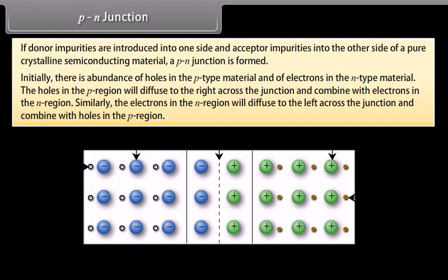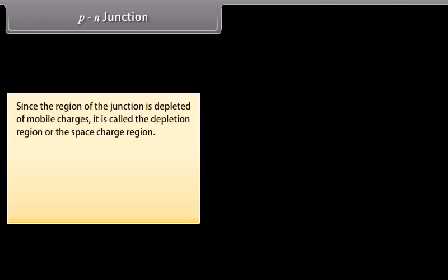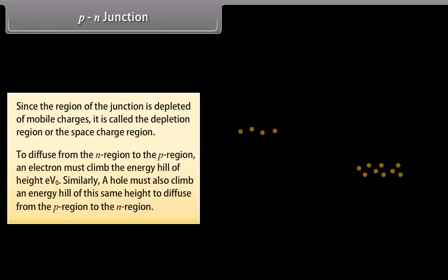Similarly, electrons in the N-region diffuse to the left across the junction and combine with holes in the P-region. For every such diffusion recombination event, the left side of the junction acquires a negative charge and the right side a positive charge. As a result, an electric field appears across the junction. Since the region of the junction is depleted of mobile charges, it is called the depletion region or space charge region. To diffuse from the N-region to the P-region, an electron must climb the energy hill of height eV₀. A hole must also climb an energy hill of the same height to diffuse from the P-region to the N-region.